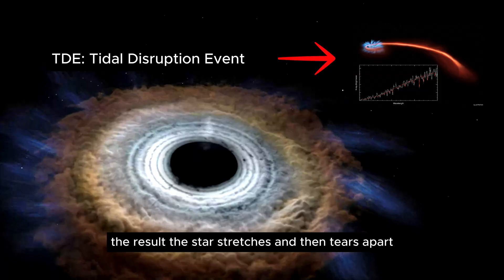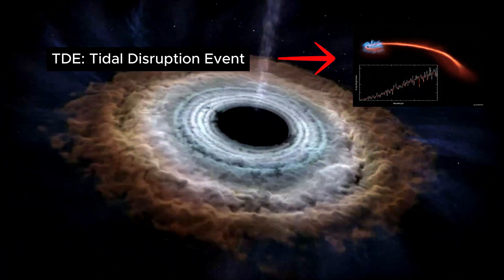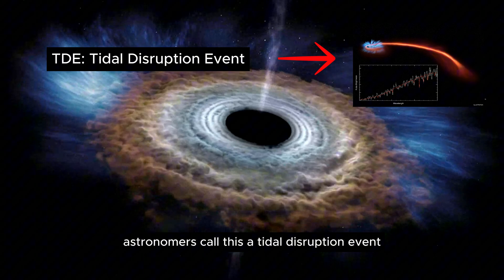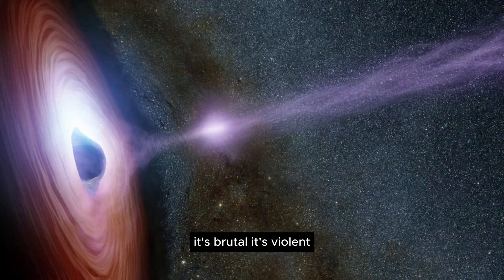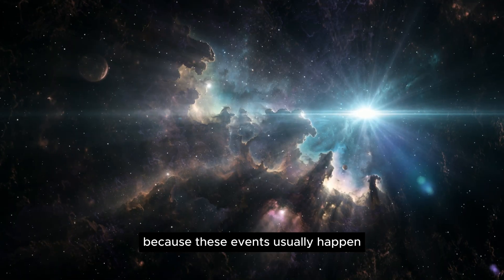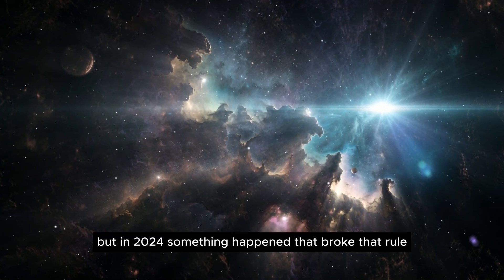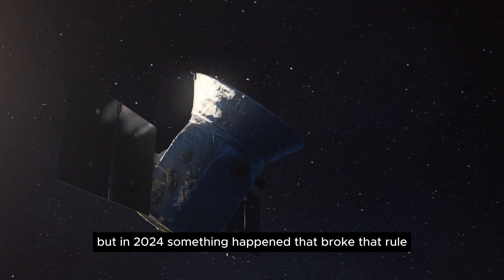The result? The star stretches and then tears apart. Astronomers call this a tidal disruption event. It's brutal. It's violent. But it's also expected, because these events usually happen at the heart of a galaxy. But in 2024, something happened that broke that rule.